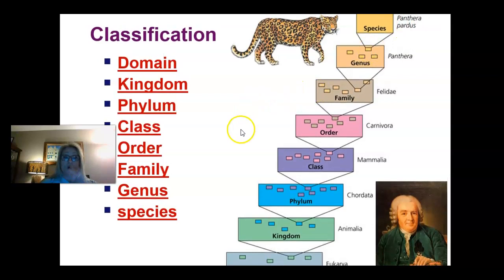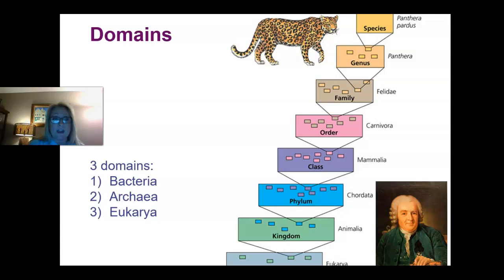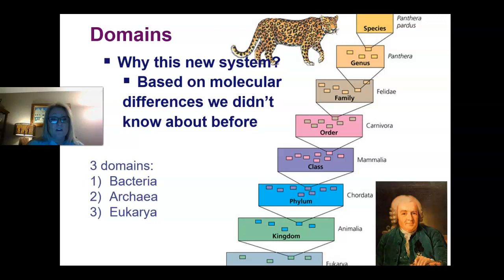If you want to include all of it, that is his completely scientific full name. The three domains are Eukarya, Archaebacteria, and Eubacteria — or just Bacteria. We came up with this new domain system because scientists figured out DNA. When we looked at relationships through DNA classifications, it became evident that we needed a new system beyond just the six kingdoms we used to have.